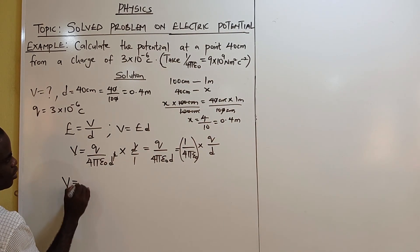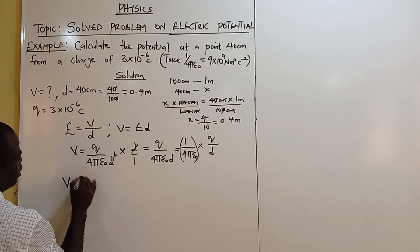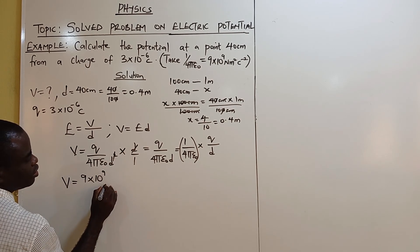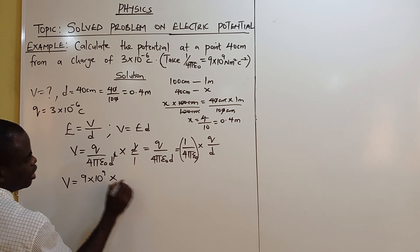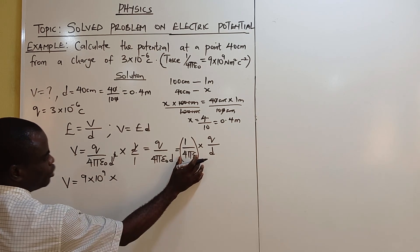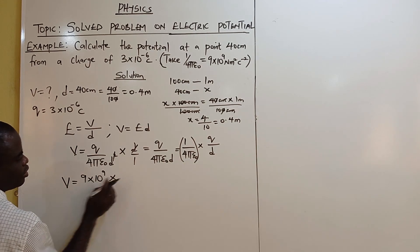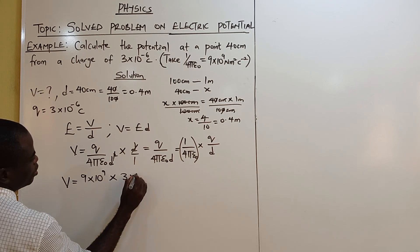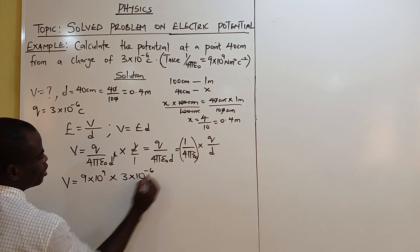Now you have V equals 9 times 10 raised to power 9 times 3 times 10 raised to power minus 6.